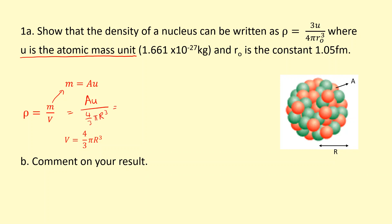I'm going to rearrange this a bit. 3 over 4, the 3 from the bottom comes to the top, over 4 pi r cubed. I know from the last lesson that r, the radius of the nucleus, is equal to r0 A to the power of a third.